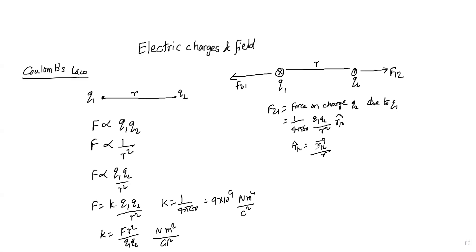F12 is equal to force on charge q1 due to q2, that is equal to 1 by 4 pi epsilon naught into q1 q2 by r square into r21 cap. r21 cap is equal to r21 bar by r, again it is a unit vector.